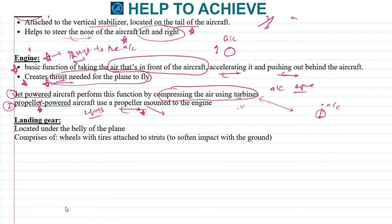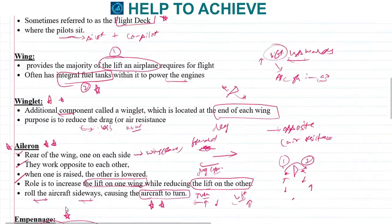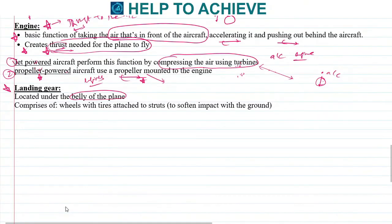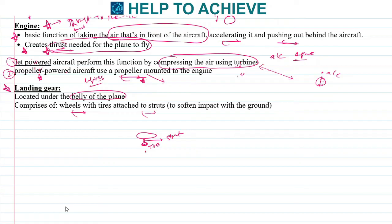The next important component is the landing gear, located under the belly of the plane. The landing gear helps the aircraft land safely. It consists of wheels with tires attached to struts — the struts are the structural connections between the aircraft body and the wheels. The strut helps soften the impact with the ground during landing.